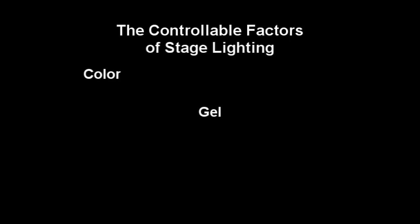Another important controllable factor of light is color. Pure white light contains all of the colors of the rainbow. In order to control the colors in white light, we need to be able to filter out the colors we don't want. The device most commonly used to do this is referred to as a gel.